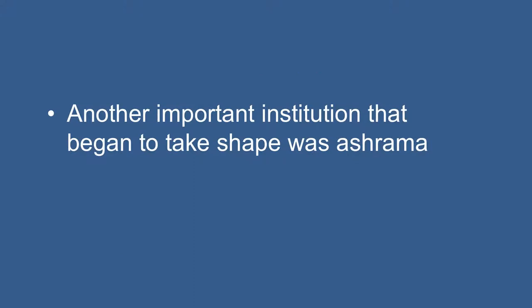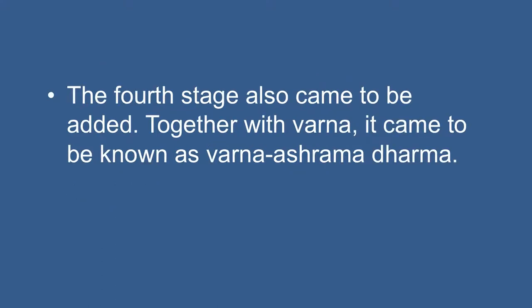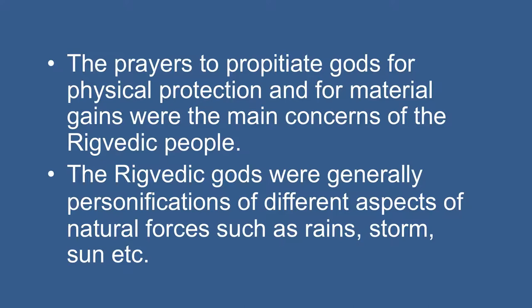Another important institution that began to take shape was Ashram, or different stages of life. These were Brahmacharya, that is student life; Grihastha, that is householder; and Vanaprastha stages, as mentioned in the texts. Later, Sanyasa, the fourth stage, also came to be added. Together with Varnas, this came to be known as the Varnashram Dharma.